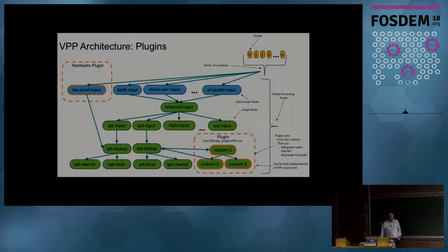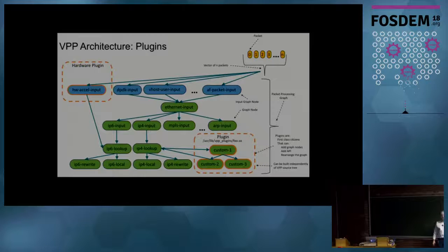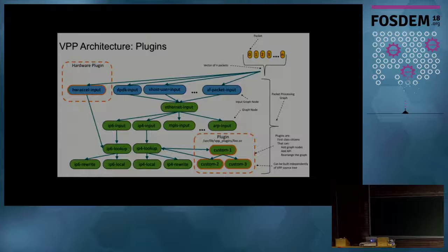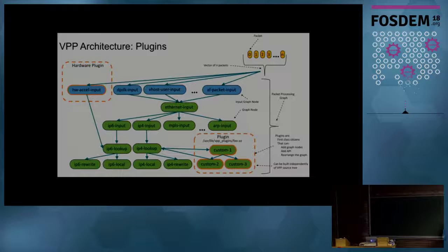You can think about hardware acceleration as well. We see NIC cards or accelerators that are able to do crypto, or that can do early levels of processing in this graph. Vhost user and AF packet input are software nodes, but nothing forbids you from having cards which will do some level of processing and inject packets later into the VPP processing graph.